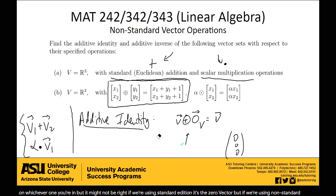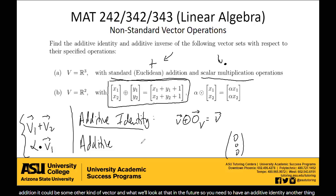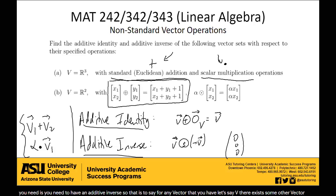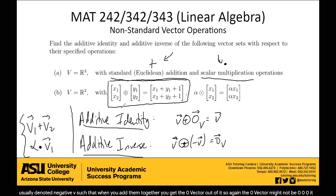You need to have an additive identity. Another thing you need is an additive inverse. That is to say, for any vector v, there exists some other vector, usually denoted negative v, such that when you add them together, you get the zero vector out of it. This zero vector might not be zero, zero, zero — it could be different depending on what your vector space is and what your additive operation is. These are two important properties in defining a vector space.